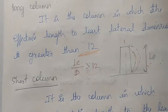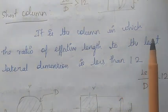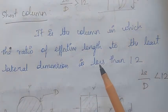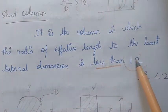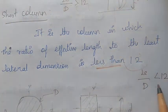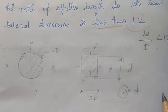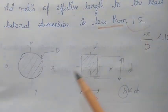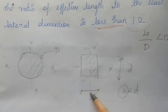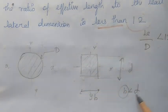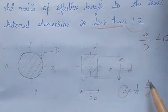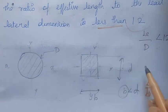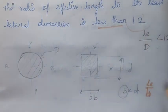We explain the long column and the short column. For different cross-section shapes — circular or rectangular — we use different dimensions. For a circular section we use diameter D; for a rectangular section we use B and D, taking the least lateral dimension. The ratio of effective length to least lateral dimension determines the column type.